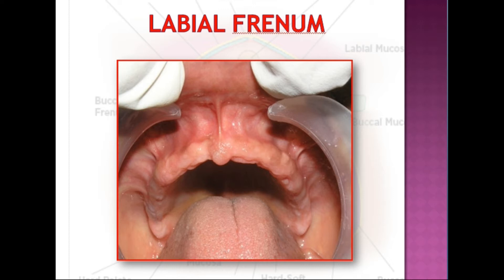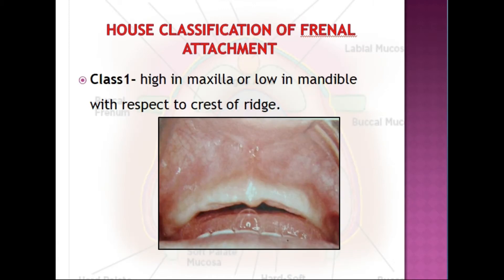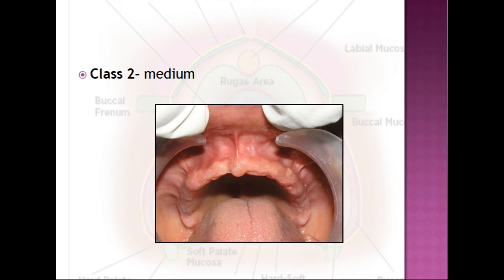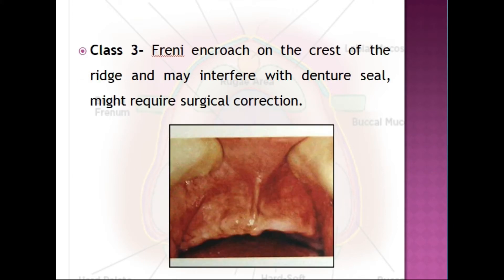If the labial frenum is prominent, a frenectomy can be done or adequate relief can be given during peripheral body molding and impression making procedures. The frenum attachment has been classified by House as Class 1, 2, and 3. Class 1 is high in the maxilla or low in the mandible with respect to the crest of the ridge. Class 2 is medium, and Class 3 is where the frenum encroaches onto the crest of the ridge, may interfere with the denture seal, and might require surgical correction.